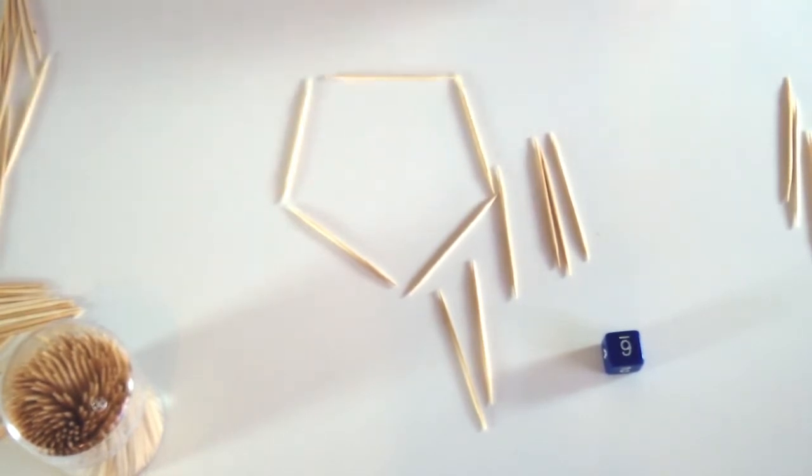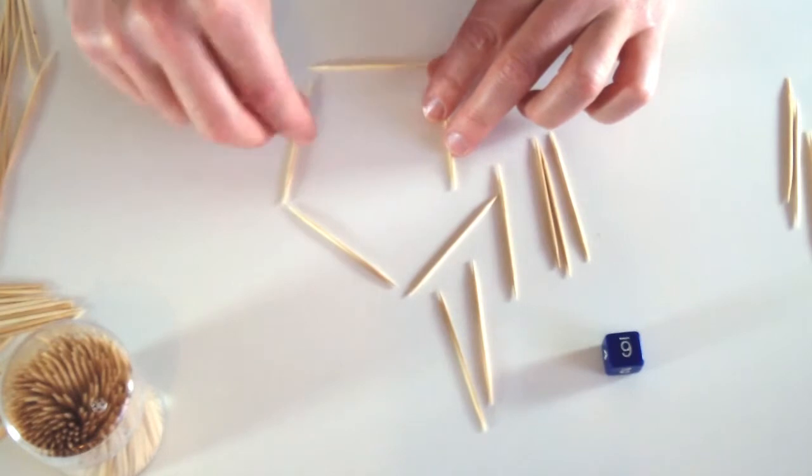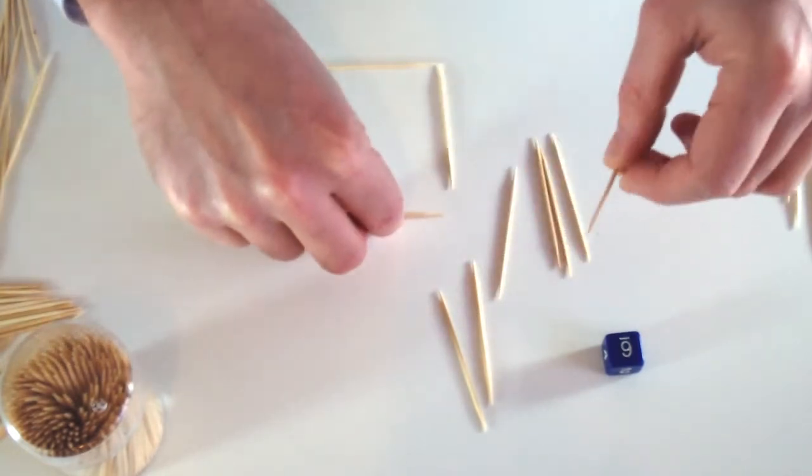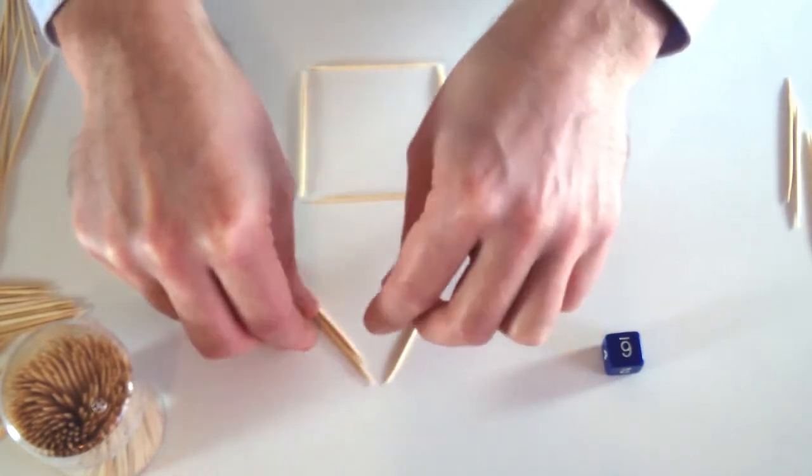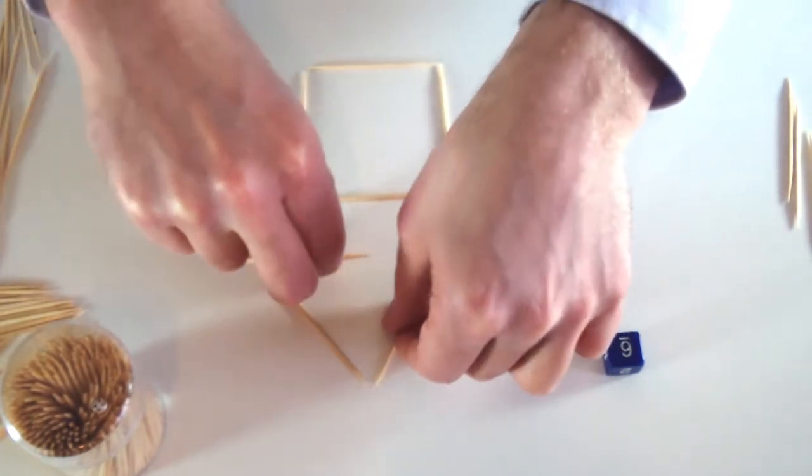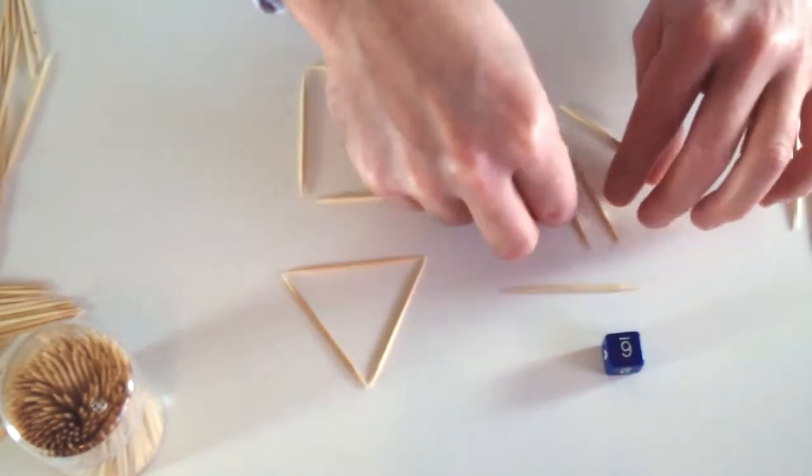I've got a pentagon. I could make a hexagon. I could do that, but instead I'm going to turn this pentagon into a square. Add this stick here. I'm going to make this one into a triangle and I'm going to make this one into a square.